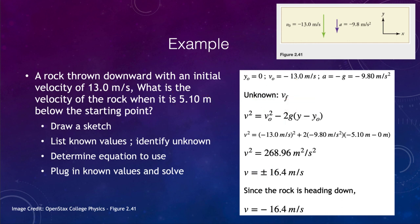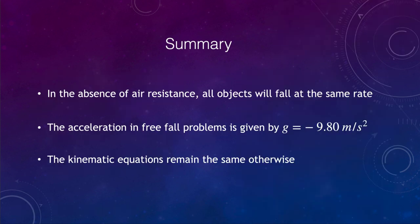So that's a couple of examples here talking about the falling objects in a gravitational field. Let's finish up with our summary and a couple of the main things that we covered. First of all, if we look at the absence of air resistance, everything falls at the same rate. And this was demonstrated on the moon in the Apollo 15 mission. The acceleration in free fall problems is given by the gravitational constant here on Earth of negative 9.8 meters per second squared. Otherwise, the kinematic equations that we used previously remain essentially the same. So that finishes up this lecture on falling objects. We'll be back again next time for another topic in physical science. So until then, have a great day everyone, and I will see you in class.